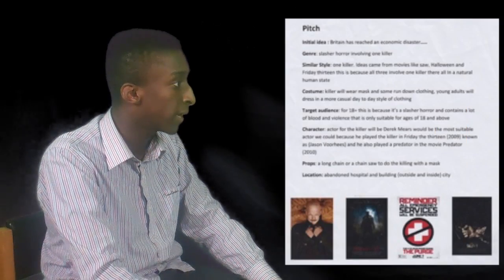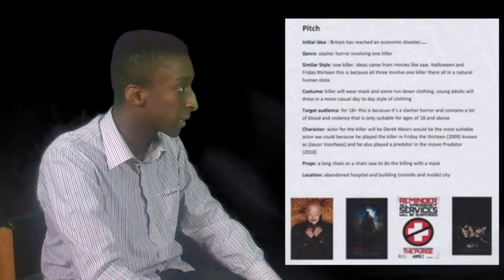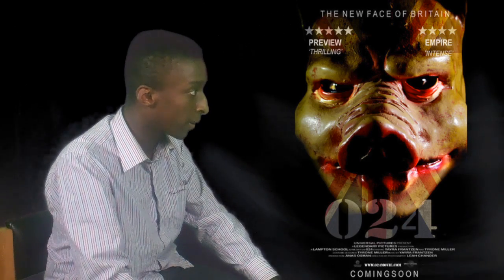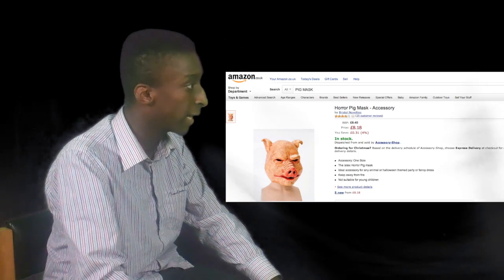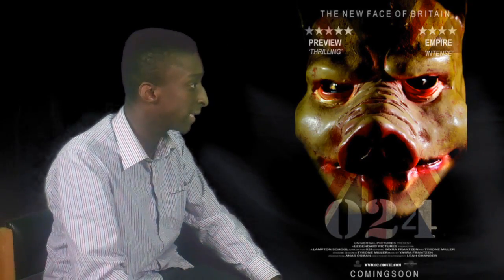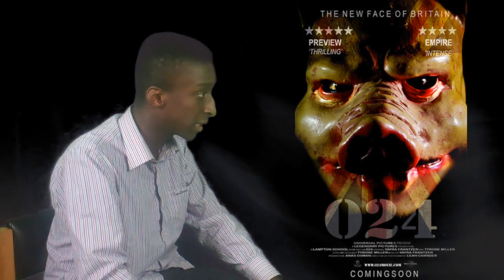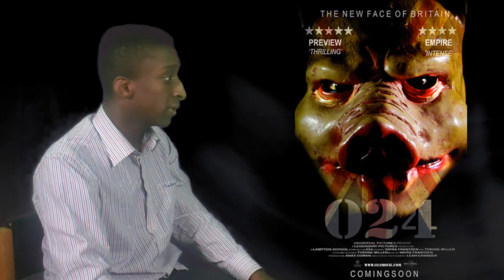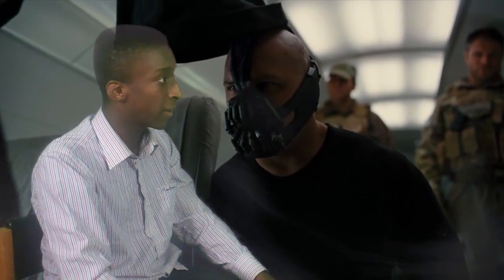Our initial idea was to have the typical stereotype horror film containing one masked killer with a weapon such as an axe, killing his victims. However, when conducting some research on masks, we came across a pig mask and then developed new concepts and ideas, changing the killer to an anti-hero. So he would challenge the conventions of a typical horror movie. By doing this, we knew that every hero must have a villain — as shown in films like The Dark Knight Rises with Batman and Bane.